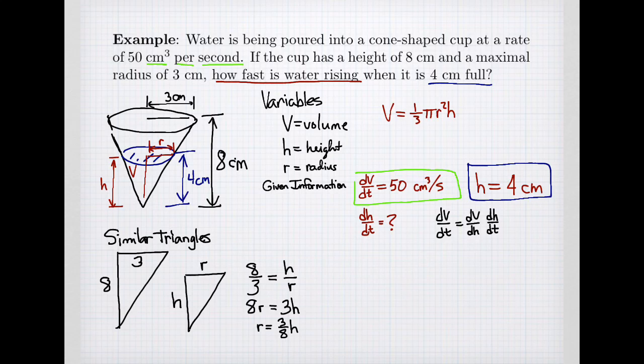And I'll use that substitution in my volume formula so that I get my volume as 1 third pi times 3 eighths, the height, that's the radius, which is squared times the height.